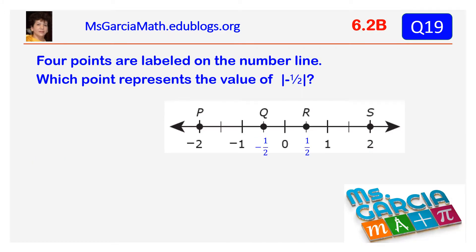Four points are labeled on the number line. Which point represents the value of the absolute value of negative one-half? The absolute value, or modulus, of a real number is the magnitude of the real number without regard to its sign. The absolute value of a number is never negative. The answer is R.